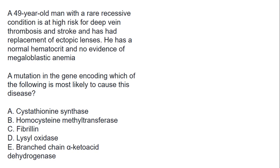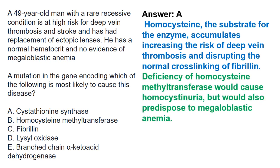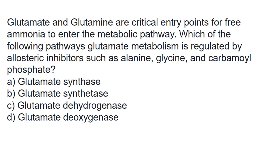A 49-year-old man with a rare recessive condition is at high risk for deep vein thrombosis and stroke, has had replacement of ectopic lenses, has a normal hematocrit, and no evidence of megaloblastic anemia. A mutation in the gene encoding which of the following is most likely to cause this disease? The best option is A. Homocysteine, the substrate for the enzyme, accumulates, increasing the risk of deep vein thrombosis and disrupting normal cross-linking of fibrin. Deficiency of homocysteine methyltransferase would cause homocystinuria but would also predispose to megaloblastic anemia.